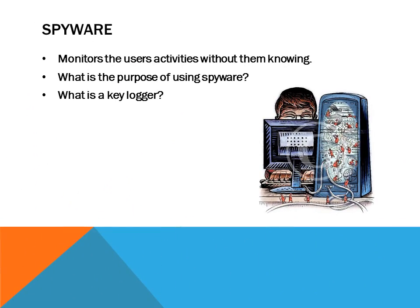The next type of malicious software we'll look at is spyware. Spyware monitors the user's activities without them knowing and can tell other people what the user is looking at or doing on the computer. The purpose could range from placing advertisements based on what you've recently searched, to using keyloggers to capture your username and passwords. A keylogger is a part of spyware that follows the keystrokes you make, so when you're inputting usernames or passwords on secure sites, it tracks and sends that information to the person who implemented the spyware, allowing them to hack your accounts. That could be a very serious ethical issue.